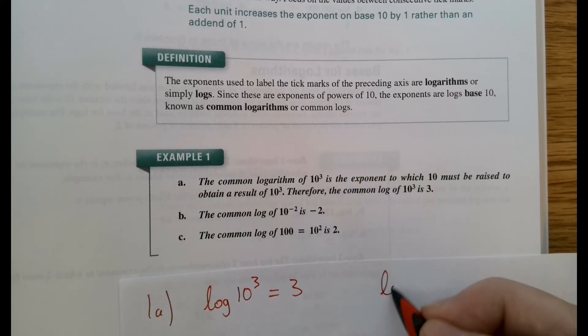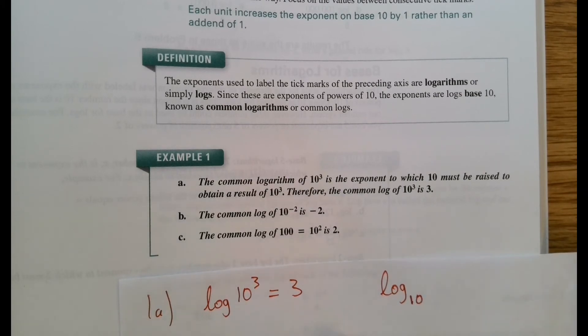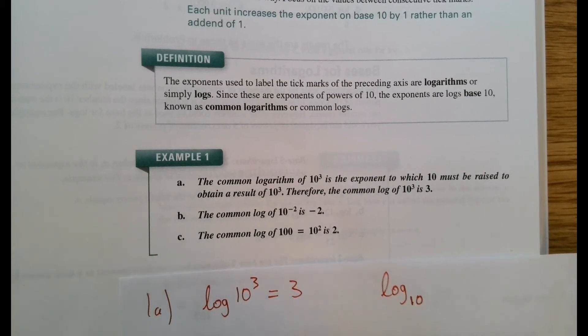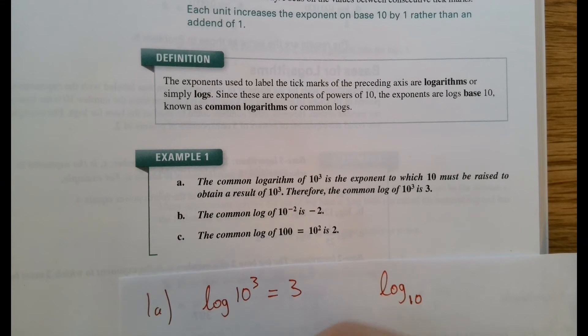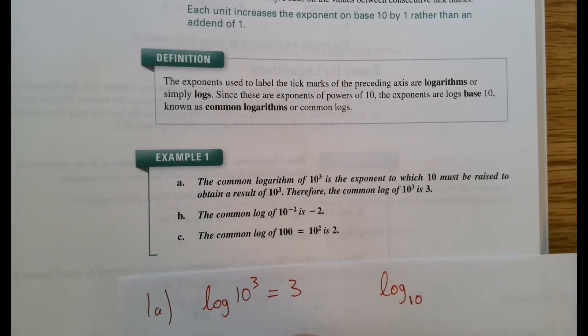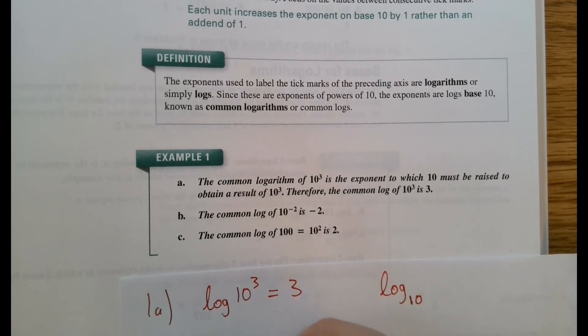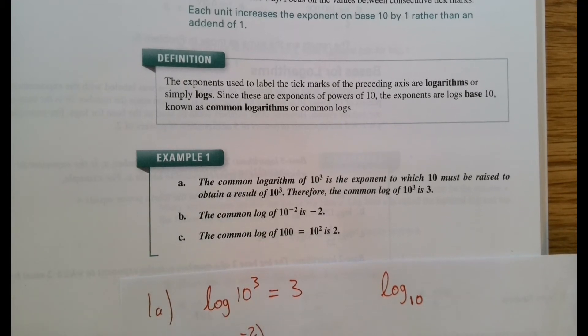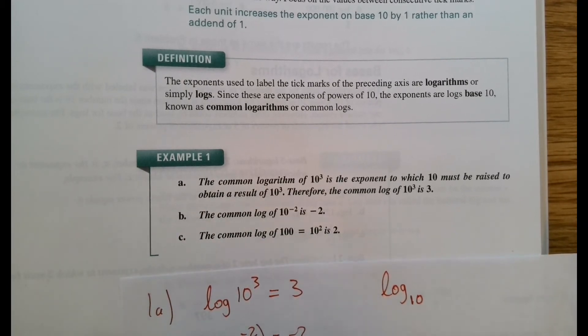In America, anytime you see log, we understand that it has a base of 10. It looks like this. And then for b here in our example, when we do common log of 10 to the negative 2, our notation would be, we're evaluating, we're thinking of log of this, and we get spit out that negative 2 as the exponent.